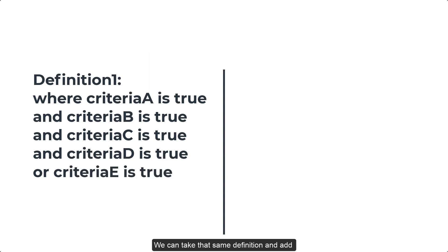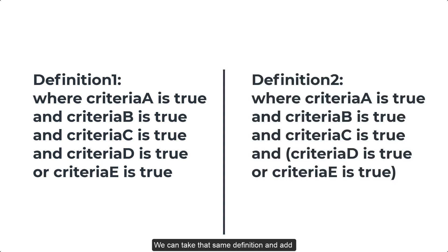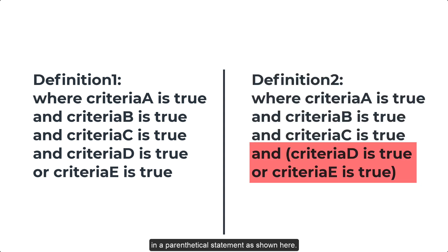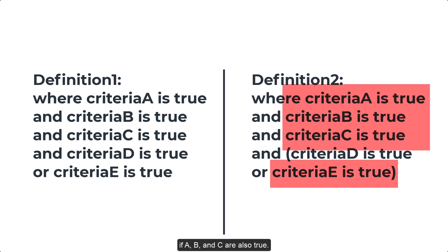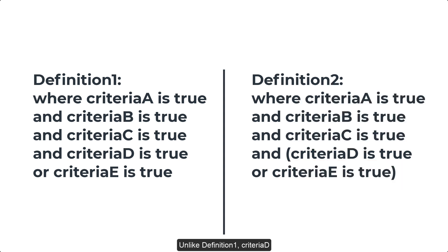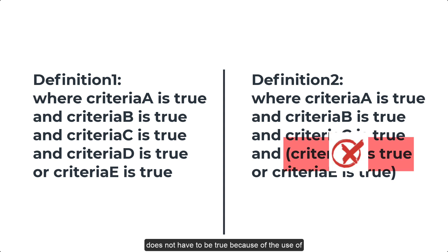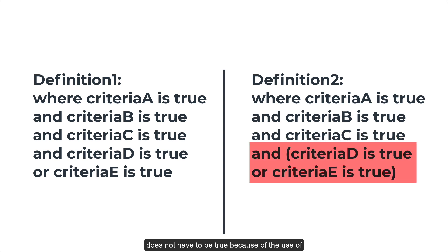We can take that same definition and add in a parenthetical statement as shown here. In this instance, if criteria E is true, then Definition 2 would be true if A, B, and C are also true. Unlike Definition 1, criteria D does not have to be true because of the use of parentheses.